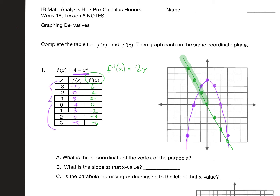Over here on the derivative line, these all have a positive y-value. Likewise, if I draw the tangent line here, that tangent line has a slope of zero, and look at where this green line is crossing — it's crossing at zero. Over here on the parabola, all of these tangent lines would have a negative slope, and you can see all of these are negative as far as y-values.